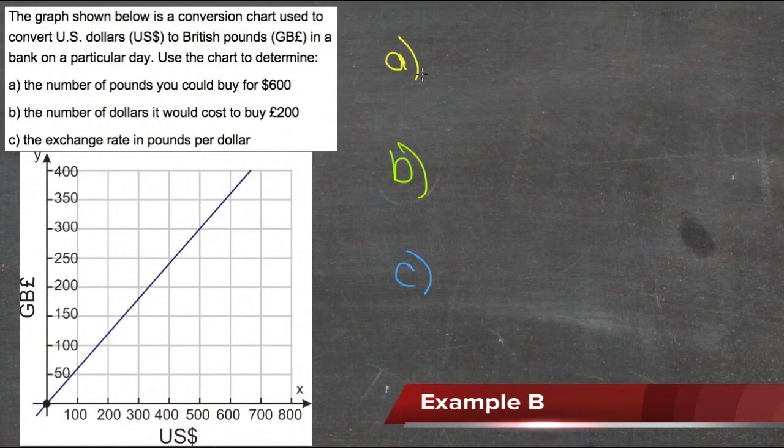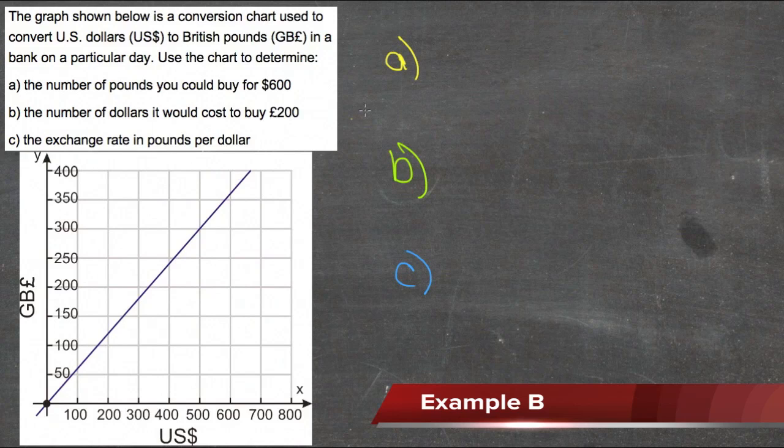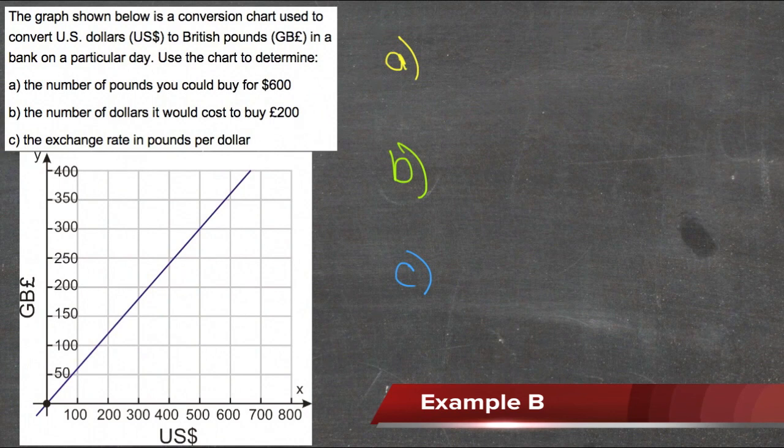Okay, here we're going to use our constant of proportionality with the chart to solve the questions in the word problem. The graph shown below is a conversion chart used to convert US dollars to British pounds in a bank on a particular day.